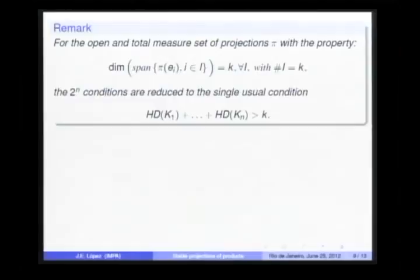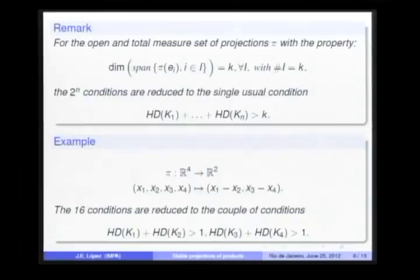This gives the positive answer to our main question. I would like to remark that for the open and total measure set of projections with the property to preserve the dimensions of the canonical Cantor spaces of ℝⁿ, the 2ⁿ conditions are reduced to the single usual condition. For this particular projection, obviously outside of the previous family, the 16 conditions are reduced to the following couple of conditions: the sum of the first two regular Cantor set dimensions is bigger than 1, and the sum of the other dimensions of the other pair is bigger than 1.